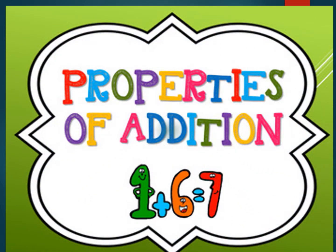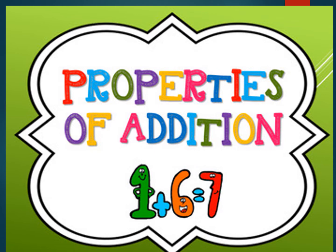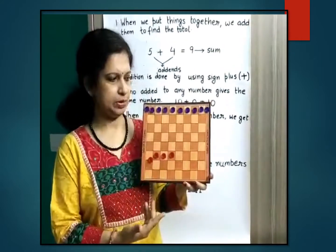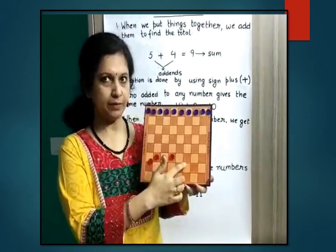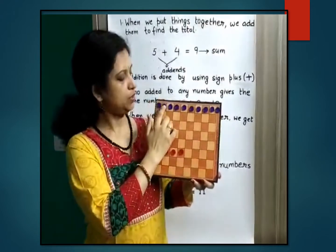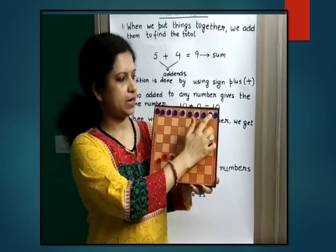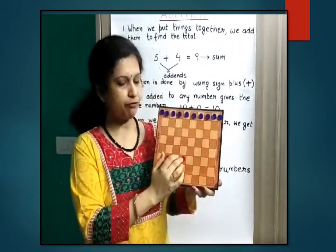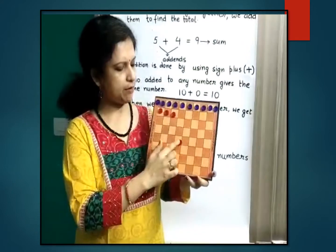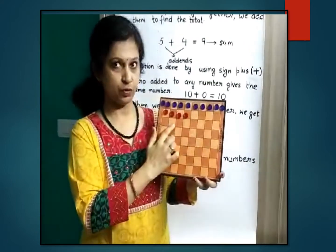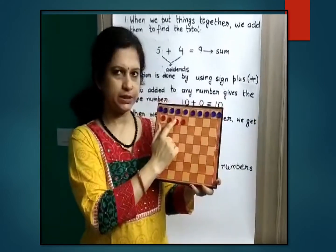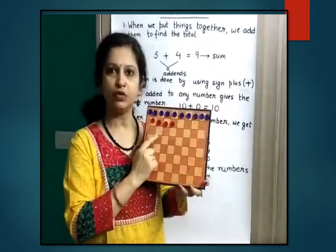Now let us understand the concept of addition through a simple example. I am playing a board game for which I have some blue coins and red coins. There are ten blue coins. I add four more red coins to it. Ten plus four — we start counting after ten: eleven, twelve, thirteen, fourteen. So ten plus four is fourteen.